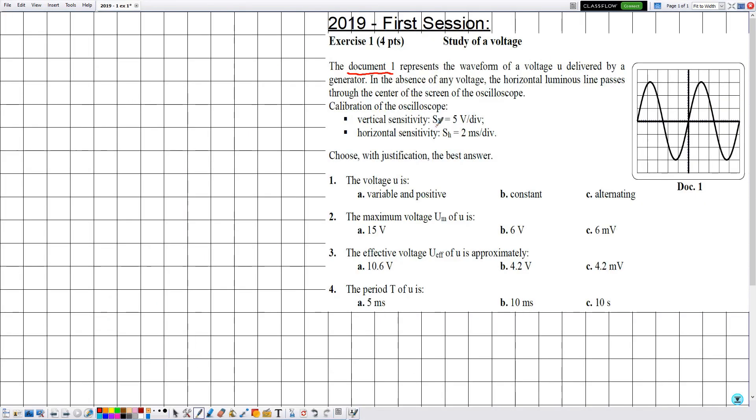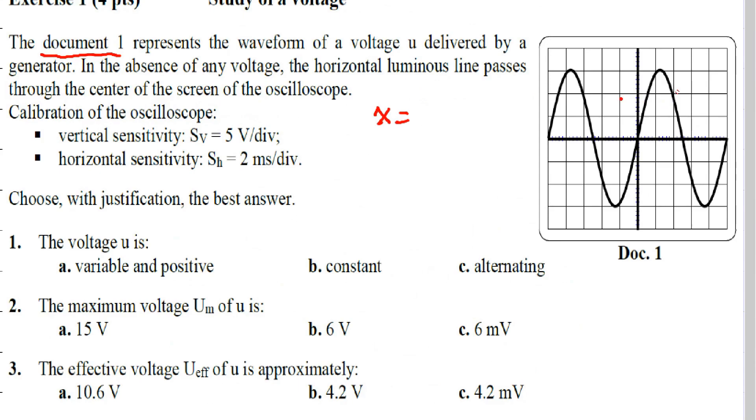Given that the vertical sensitivity is 5 volts per division and the horizontal sensitivity is 2 milliseconds per division, the trick in solving such exercises is to determine the values of x and y. Before we solve, the value of x represents the number of divisions along the x-axis.